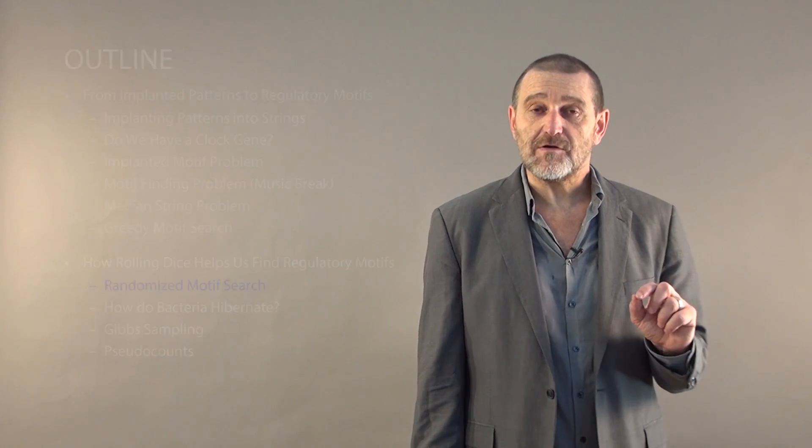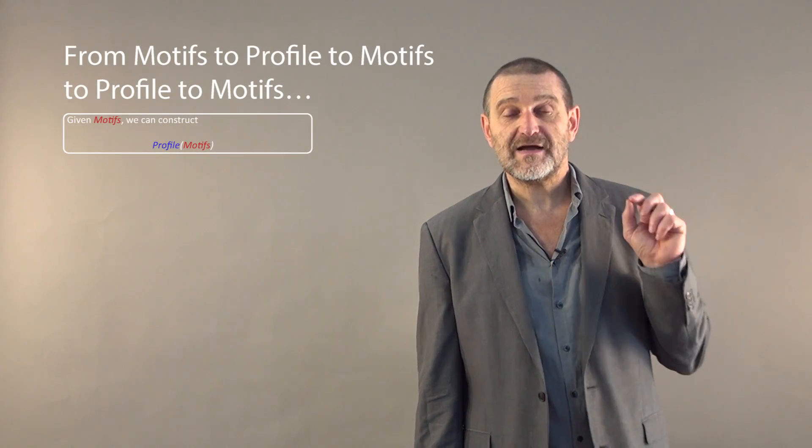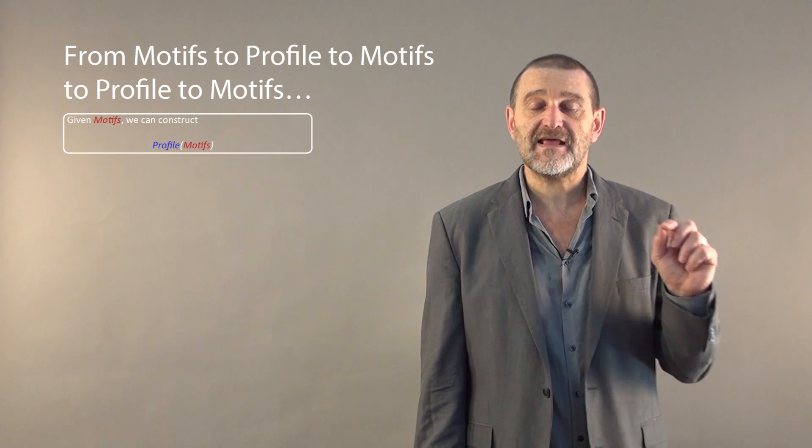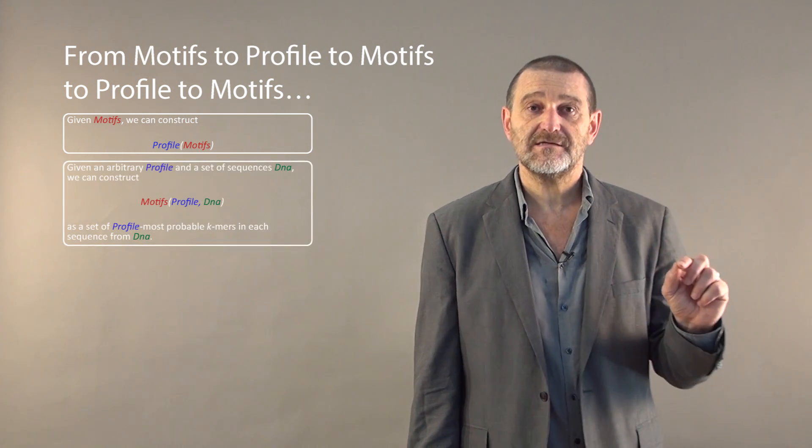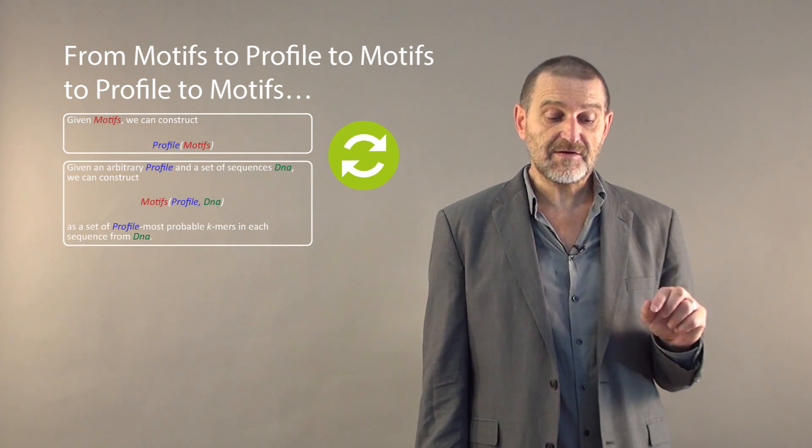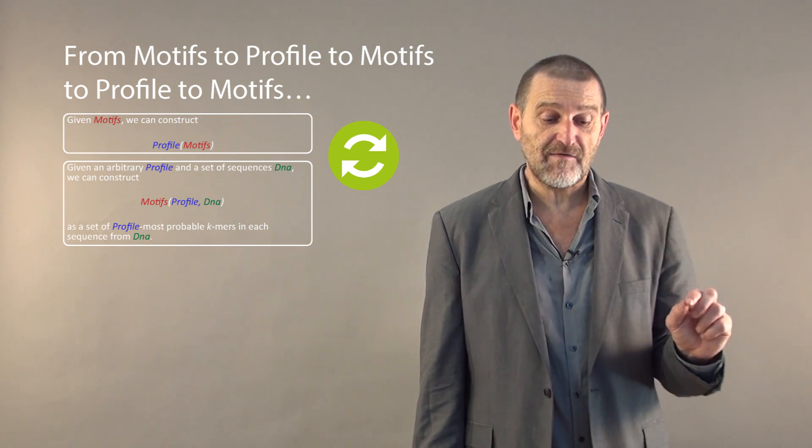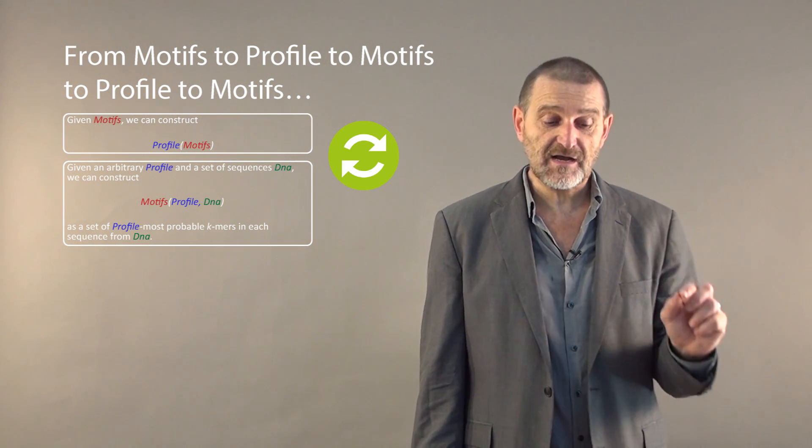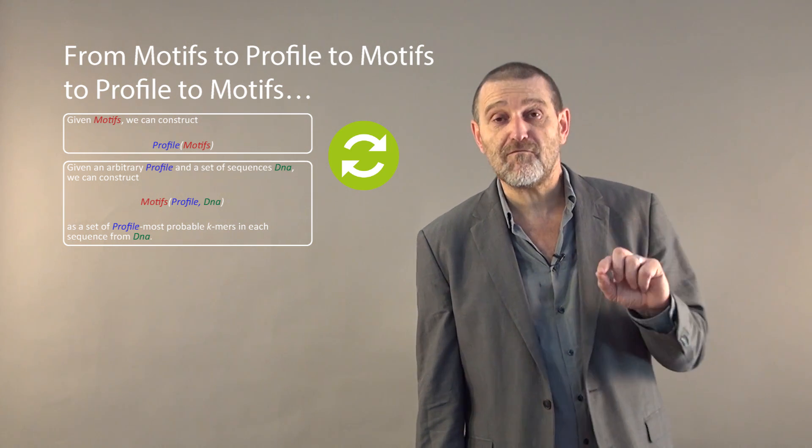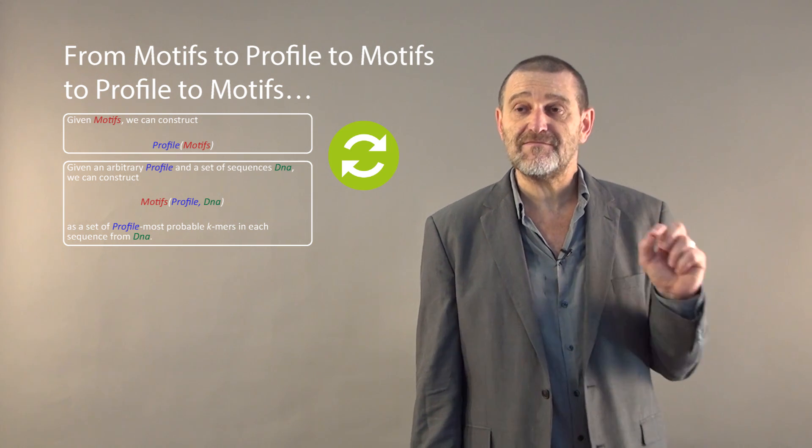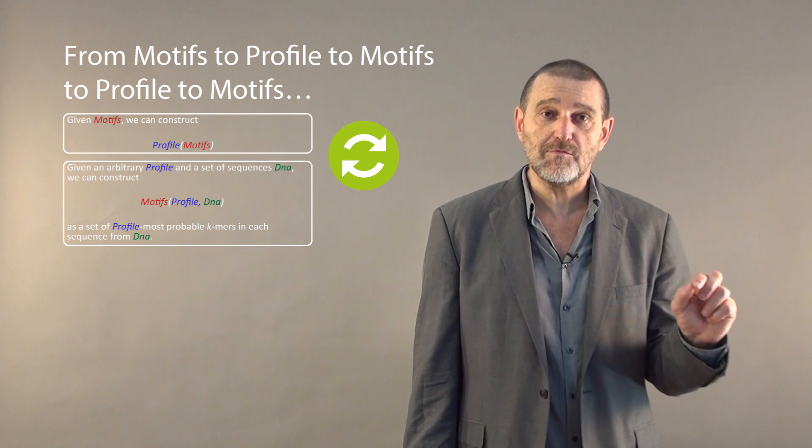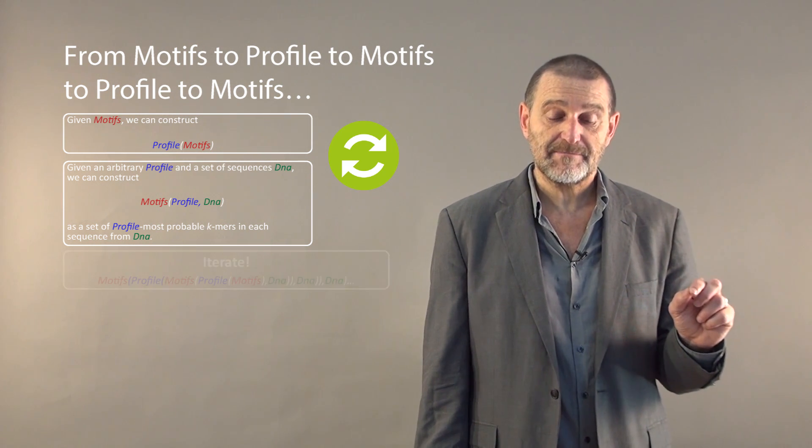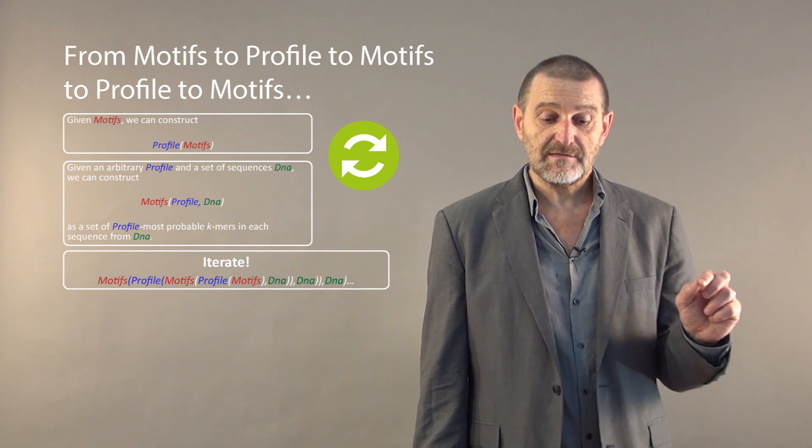How do they work? We've learned how to construct a profile given motifs, but can we construct motifs given a profile? We can, because given an arbitrary profile and a set of DNA sequences, we can construct the set of motifs of profile and DNA by simply finding profile most probable k-mers in each sequence from DNA.